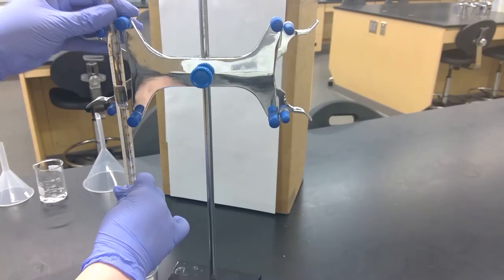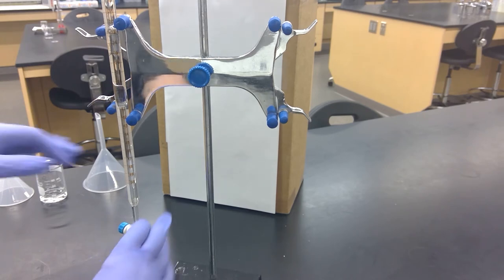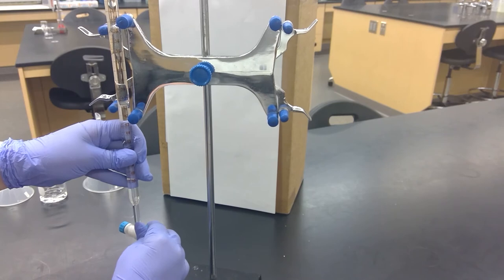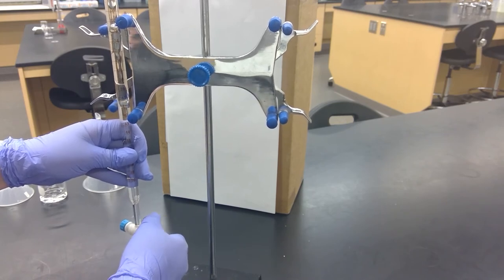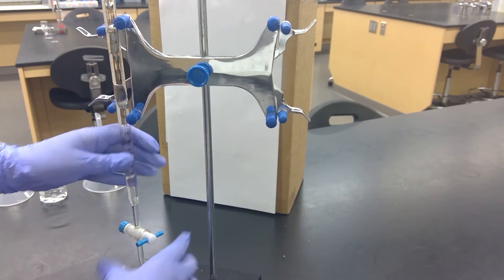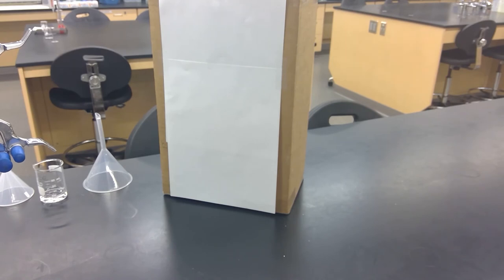Now you should have two data points. We'll have to do this three more times. Now we're slightly past 12 mils, so we will go to around 16-ish mils. Record the final volume on your burette again.